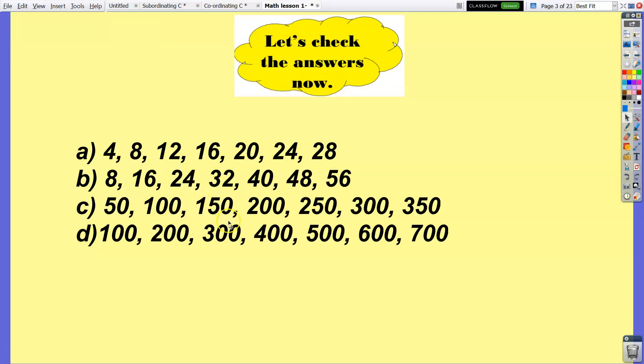For letter d, counting by 100: 100, 200, 300, 400, 500, 600 and 700.